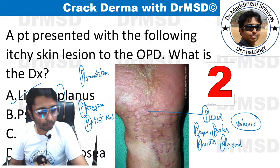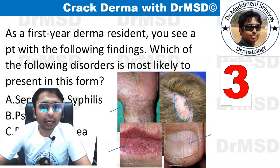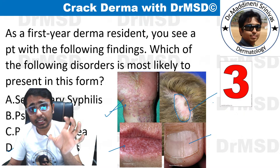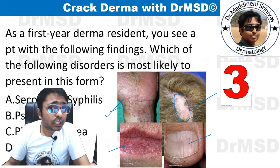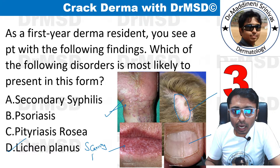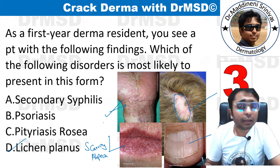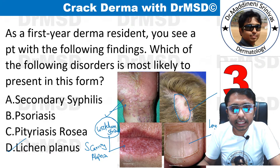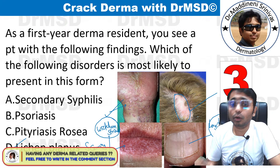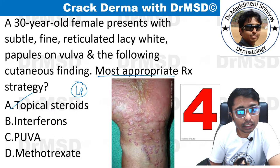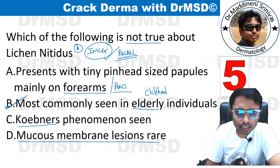Looking at the picture again — violaceous papules and plaques on the flexor aspect. If lichen planus is associated with the scalp it produces scarring alopecia. Over the lips, the white lacy pattern seen is called Wickham's striae. Over the nails, longitudinal ridges are seen. All of these are associated with lichen planus, and the most appropriate initial treatment to advise patients is topical steroids.